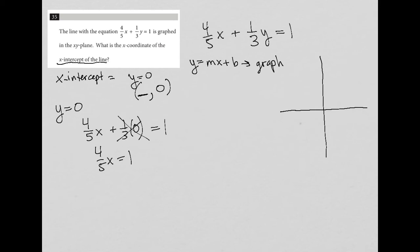And now when I want to solve for x, I'm going to multiply both sides of this equation by the reciprocal of the 4/5, because that allows these numbers to cross-cancel, leaving me with only x on the left-hand side.